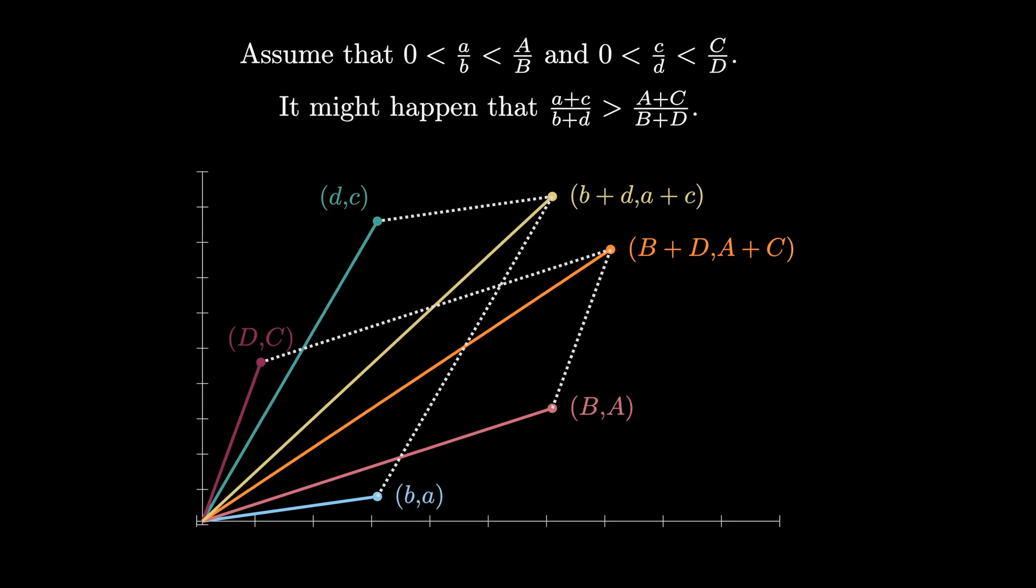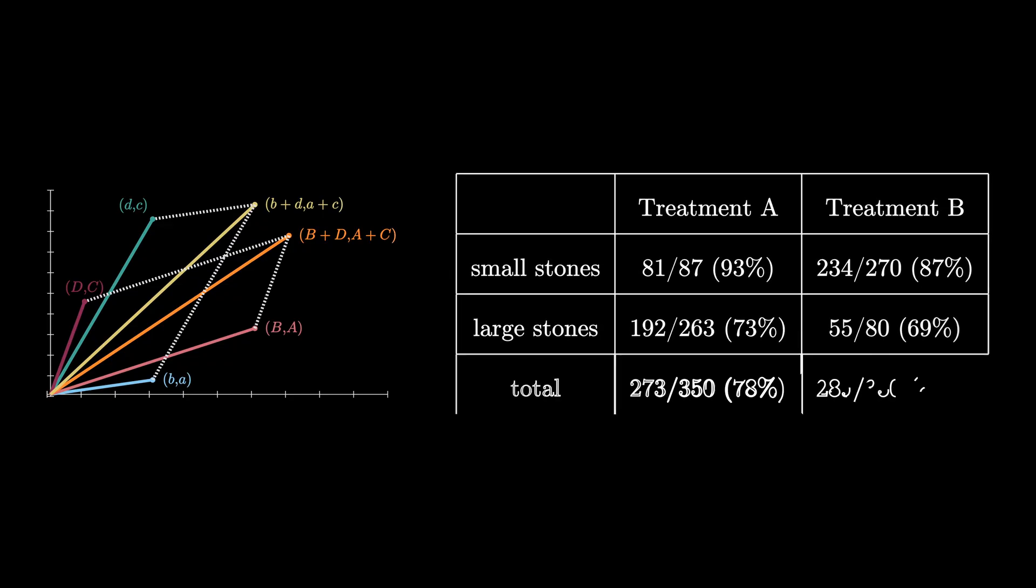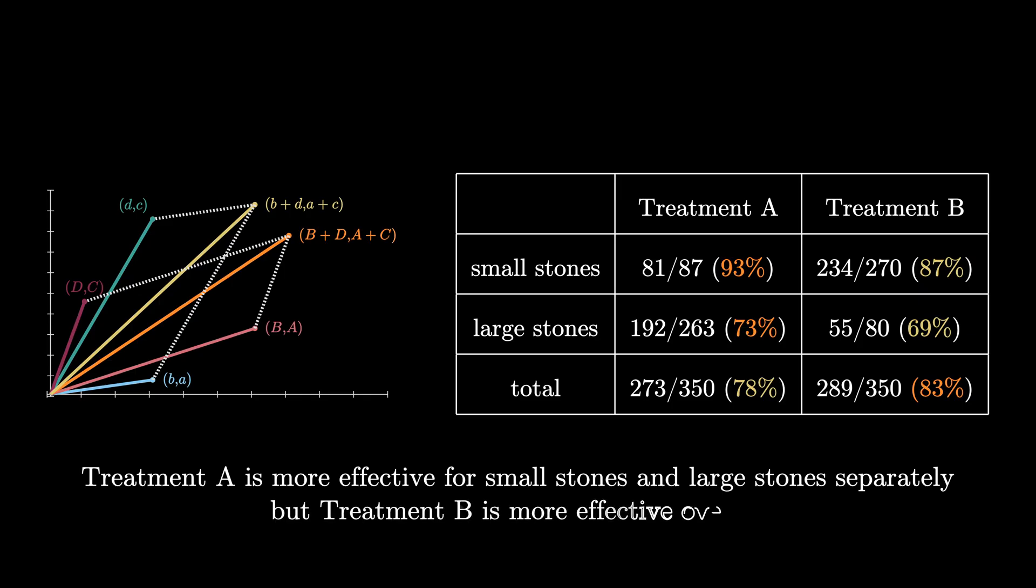Here's one more example. Consider two different treatments for kidney stones as shown in the table. From this data, we see that treatment A is better for small stones and large stones separately. However, in the aggregate, treatment B is more effective. Can you see why this happens from the number of cases in each cell?